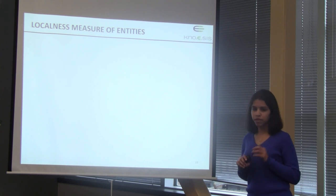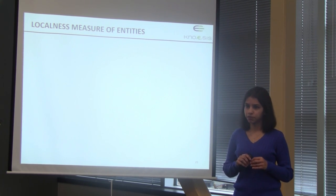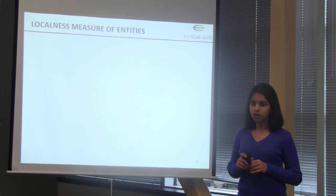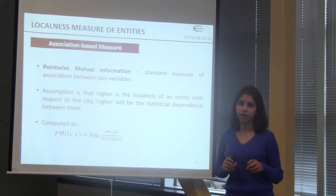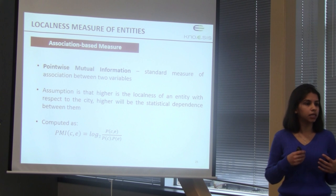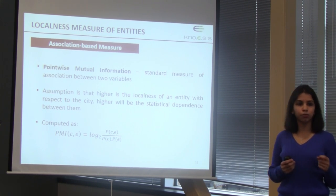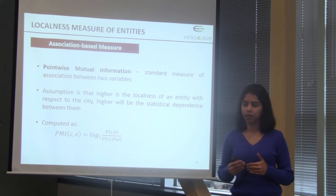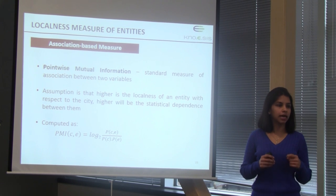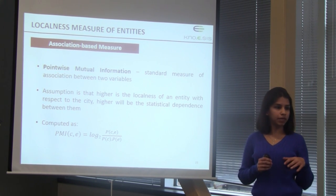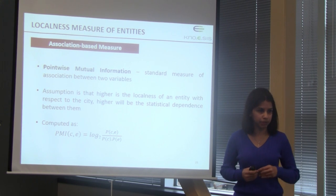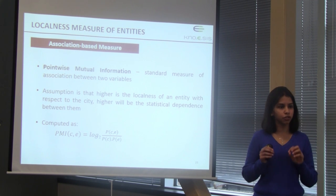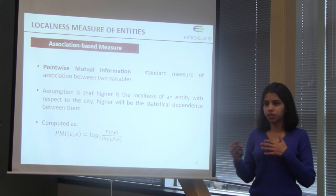We experiment with three classes of measures to identify the localness of an entity. First are association-based measures, then graph-based measures, and semantic overlap-based measures. Association-based measures have been used to identify relatedness between two words based on co-occurrence in a large corpus. We use the same idea to measure localness based on occurrence in the entire Wikipedia dump — specifically, the presence of hyperlinks to both the city and the entity — computing PMI based on how many times links to the entity and city co-occur versus individually.